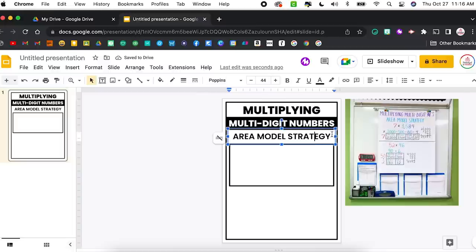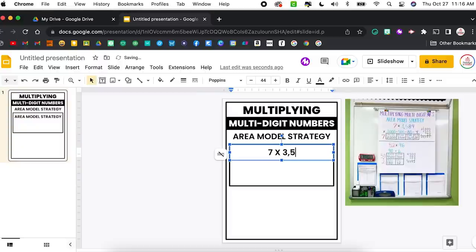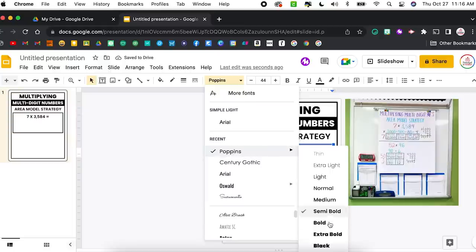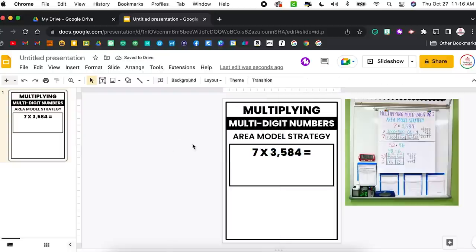I need another text box in order to put the problem. So I'm going to duplicate this one and drag it down. We're going to resize it to match there. And I'm going to type in that problem, which was seven times 3,584 equals. And then we'll fill in the rest when we get there. Although I'm going to change this to extra bold, nice and chunky. That looks pretty good. We can make it bigger. Let's go size like 56. We'll leave it there for now. And then we can adjust later.